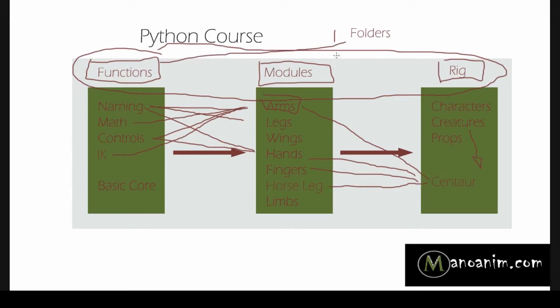So we'd have a function folder, we'd have a module folder, we'd have a rig folder. And inside those, these are the scripts, right? So these are the different kinds of scripts we would have. So we have a naming script, but because there's so many different ways that we can name stuff, maybe we just want to name a single object, maybe we want to name a chain of objects.